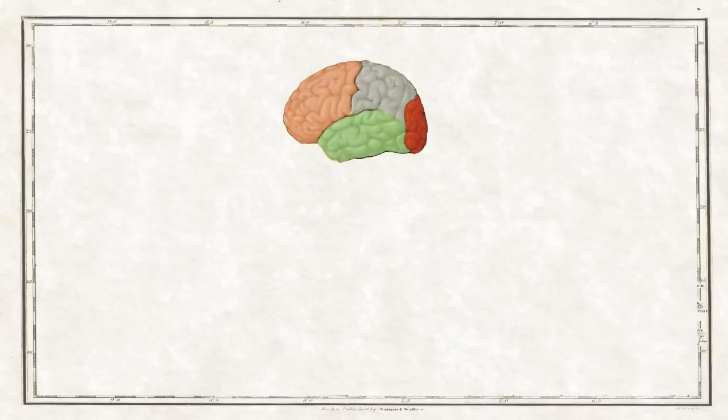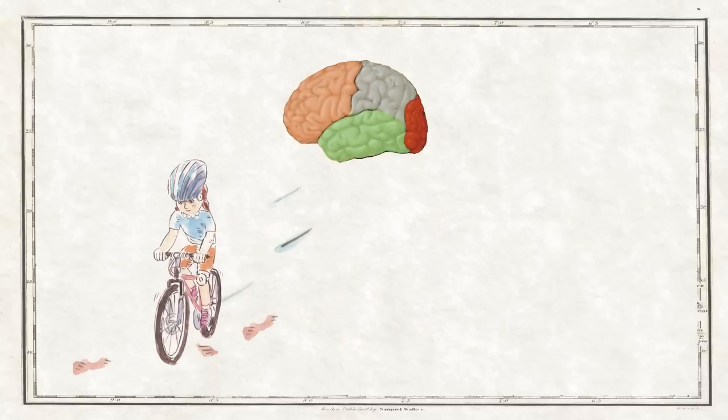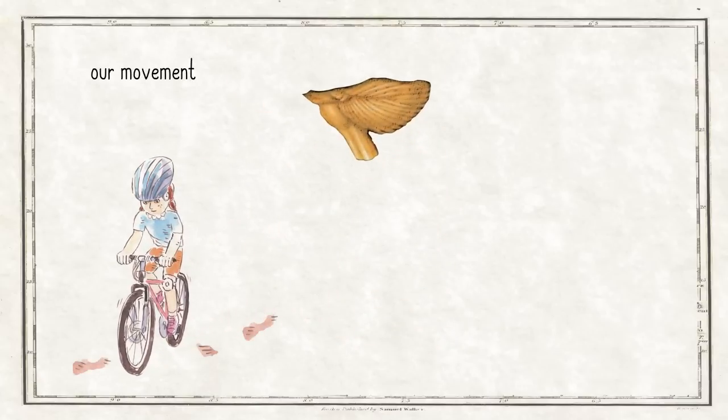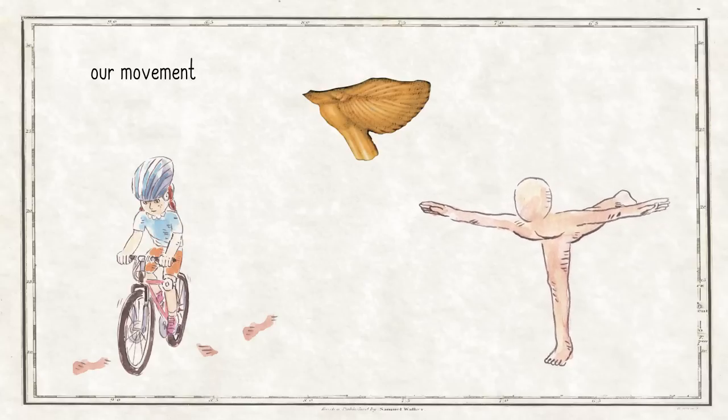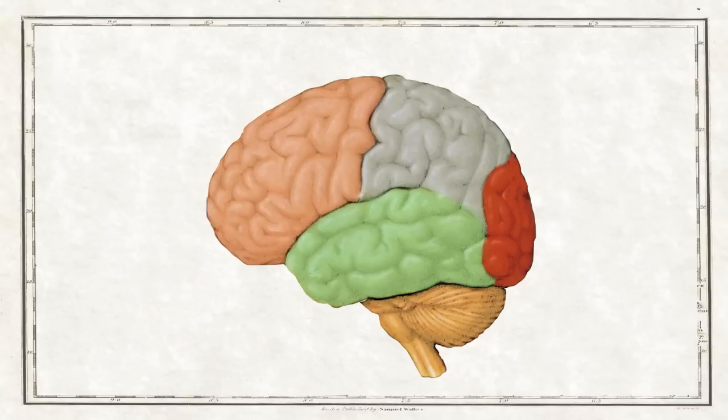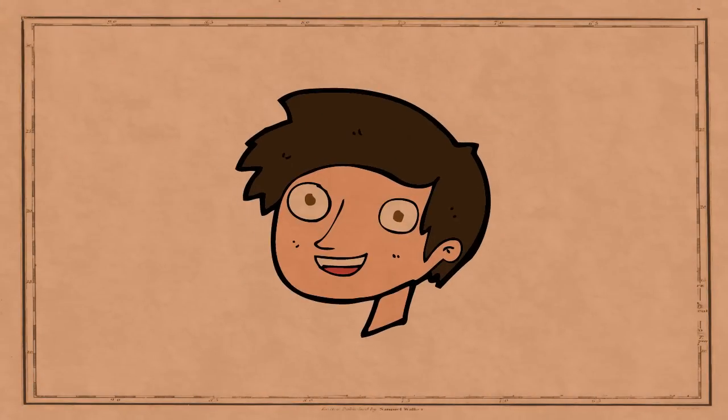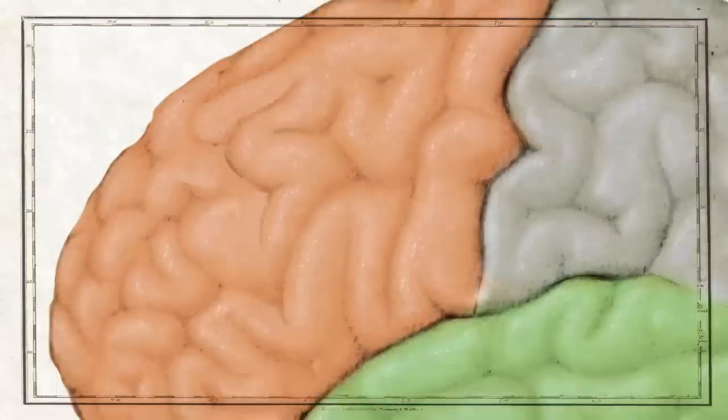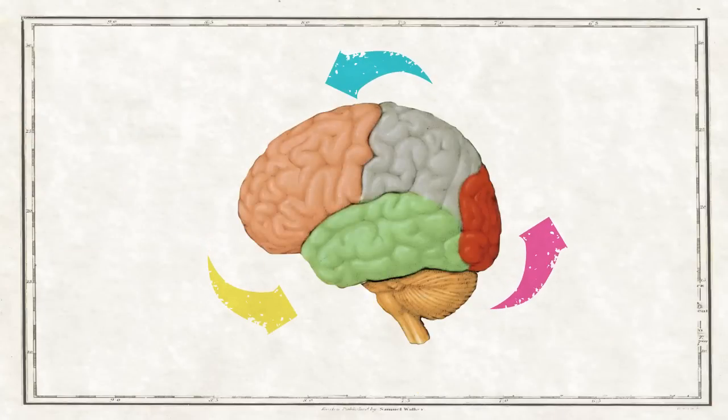Some parts of the brain are responsible for our movement, and other parts are responsible for our balance and coordination. But did you know that just one small area of the brain can be responsible for several functions, and some areas often work together?